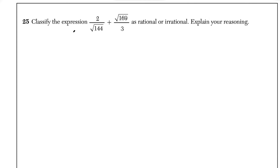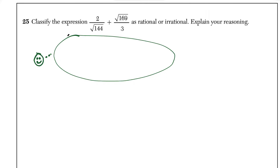We have to explain our reasoning. The first thing we should know is what does it mean for a number to be rational? A rational number is a number that can be expressed as the quotient of two integers where the denominator is non-zero. So our integers a and b — the one condition is that b cannot be zero.